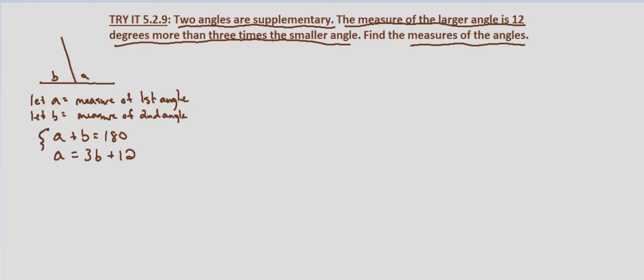So here's our system of equations. a plus b equals 180. a equals 3b plus 12.